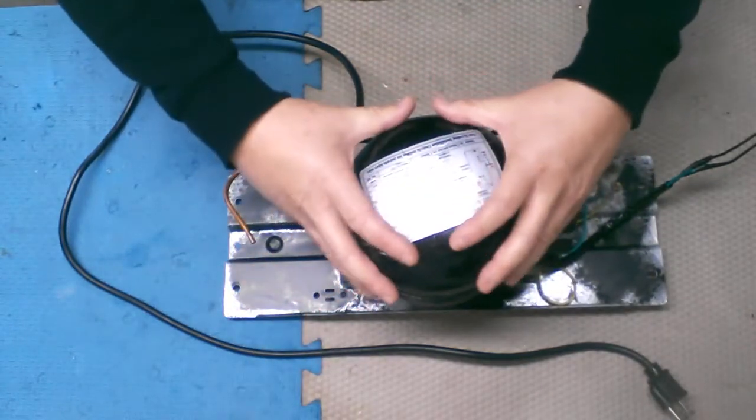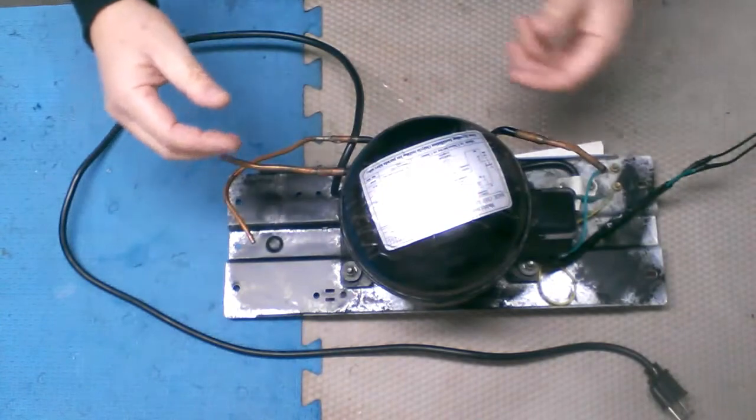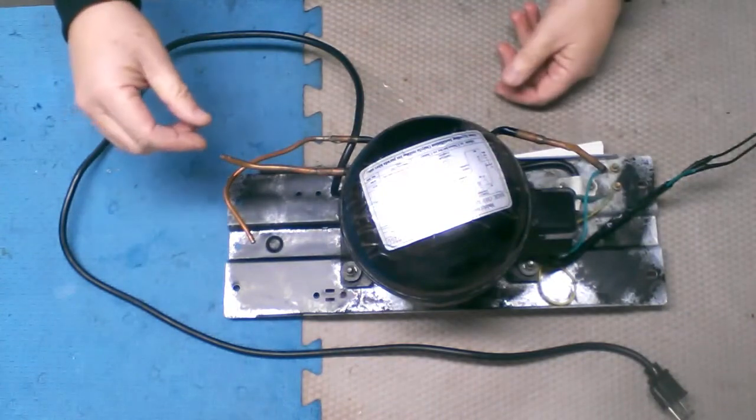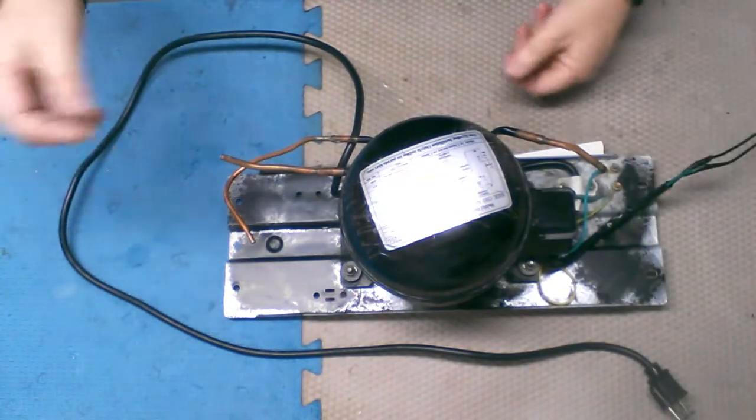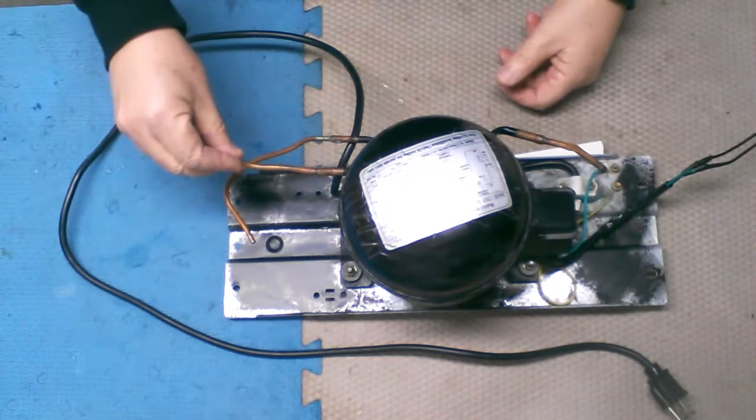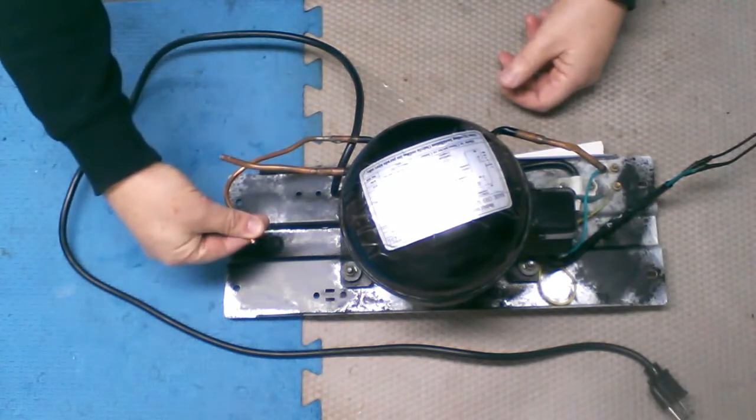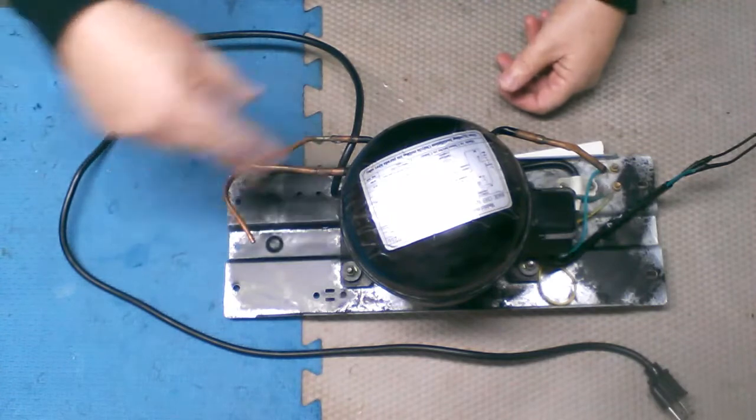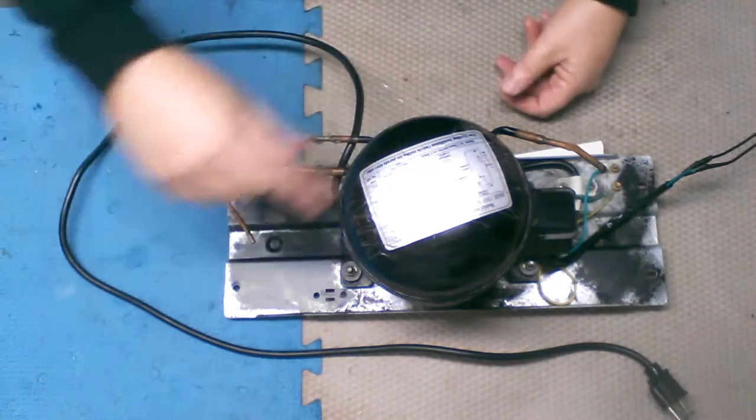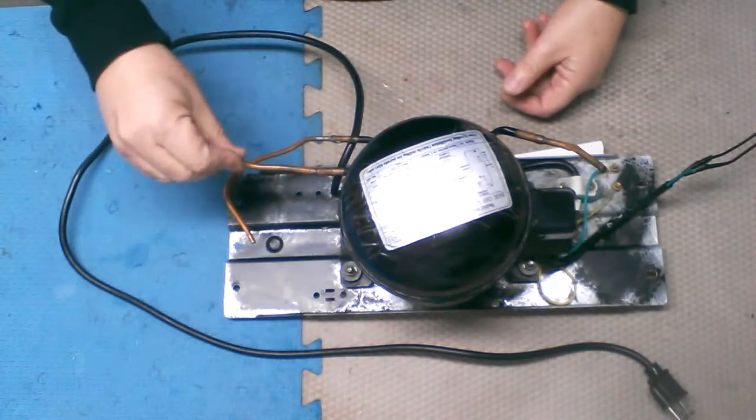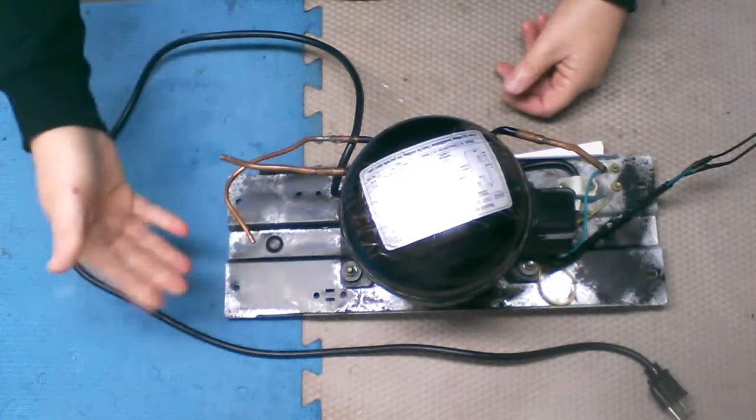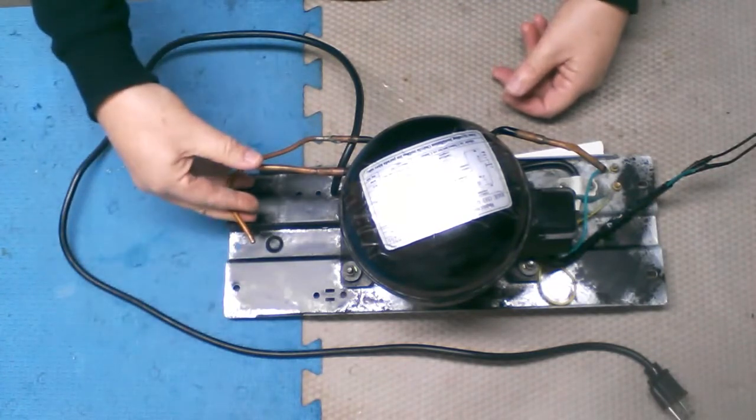You have basically just like a regular compressor, the inlet for the air going in and the outlet for the air going out. Normally this cycles the Freon back and forth in a closed loop, but we cut that off here and here, and now we're able to do whatever we want with it.